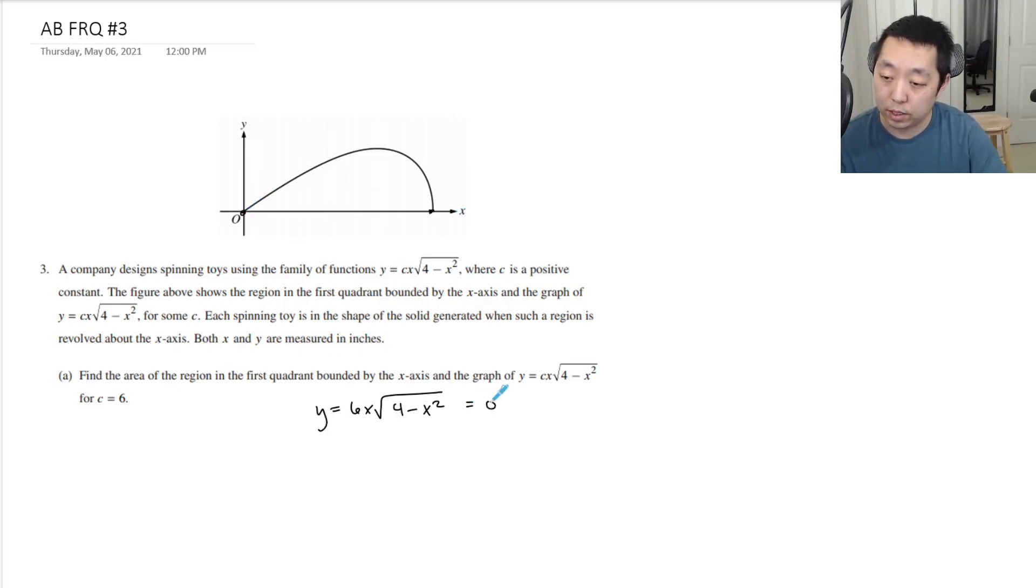That happens when x is zero or 4 - x² is zero, which is plus or minus 2. So this is probably 2 on the right side here.